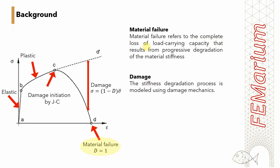Material failure refers to the complete loss of load carrying capacity that results from progressive degradation of the material stiffness. This stiffness degradation is characterized by a damage parameter D, varying from 0 — no damage — to 1, which means material failure.